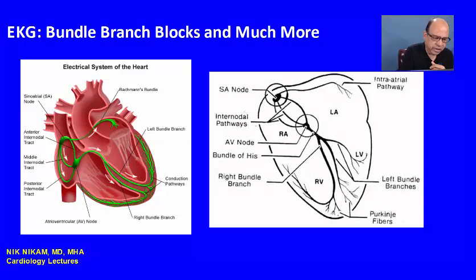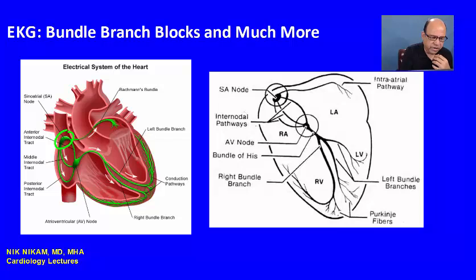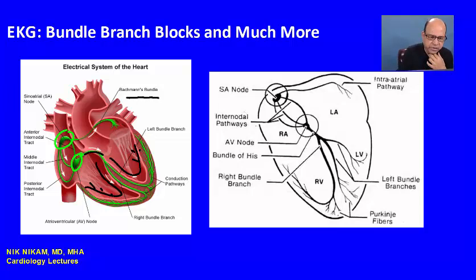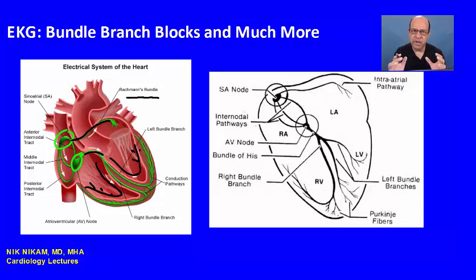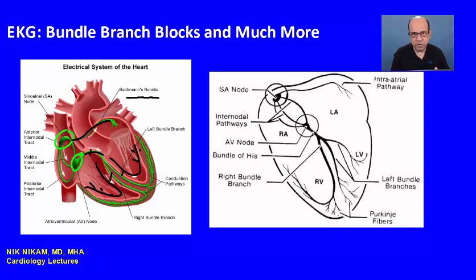Here is the sinus node which generates the impulse, transmitted through intranodal connections to the AV node. We have the bundle of His which divides into the right bundle and Purkinje fibers, eventually activating the left and right ventricles. There is also the Bachmann bundle which supplies the left atrial musculature so that both atria contract at the same time, and both ventricles normally contract at the same time. However, if we get blockage in one of these bundles, then Houston we have a problem.